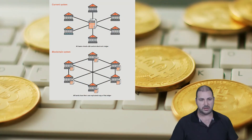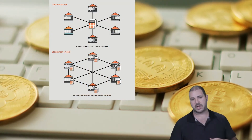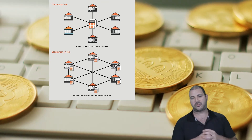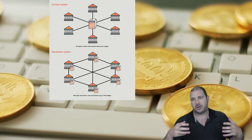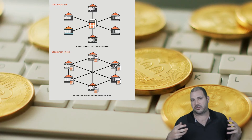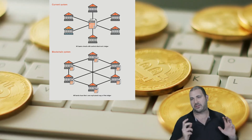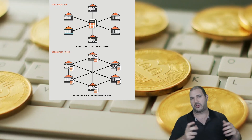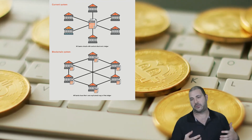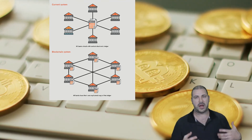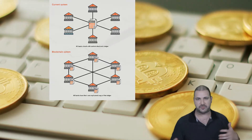Here is another example. The current system calculates everything at the end in the central. But why not have all the banks in the network connected to a decentralized system, where all those different banks confirm all the transactions? Then you get guaranteed and quick settlement, so there's less time wasted waiting for transactions and money to flow.